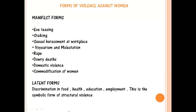Under manifest forms — which means visible forms — we can include eve-teasing, stalking, sexual harassment at work, voyeurism, molestation. You can check the Justice Verma Committee, which was formed after the Nirbhaya incident; it has expanded the number of forms included under violence against women. Other examples are rape, dowry death, domestic violence, and commodification of women. For sexual harassment at the workplace, there is also the Vishakha Committee and related legislation.